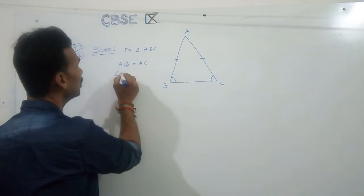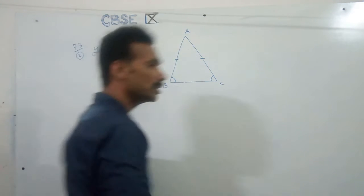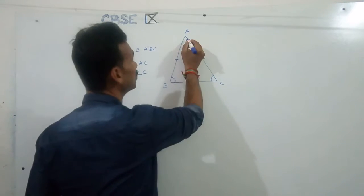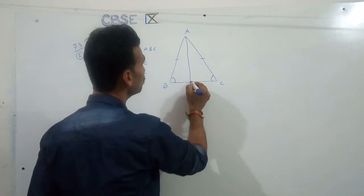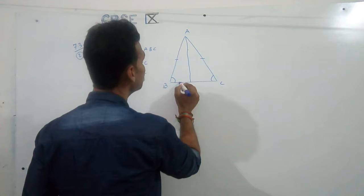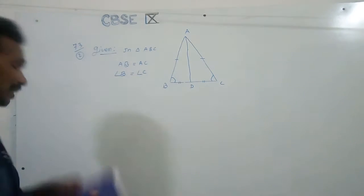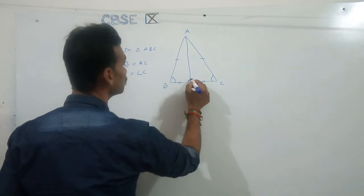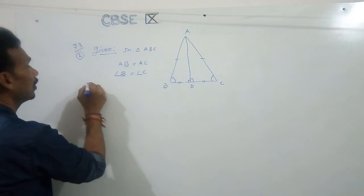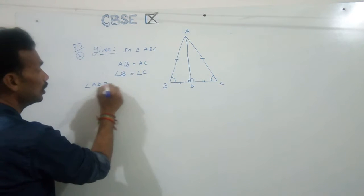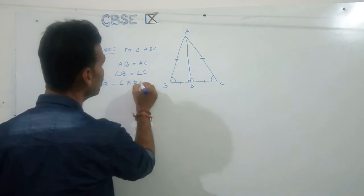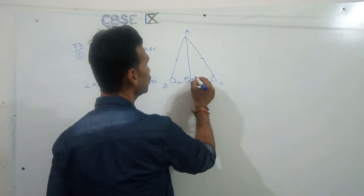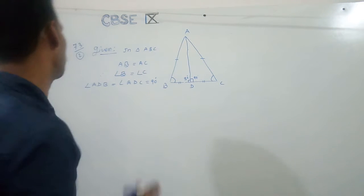Then we can say that this angle equal to this. Therefore angle B equal to angle C, period, understood. And then so that first to prove AD bisects BC. AD bisects BC means this AD bisects BC. That is AD is an altitude, meaning perpendicular bisector, means this is so AD. Now angle ADB equal to angle ADC equal to 90 degree, clear? This is 90 degree, clear, this is 90 degree, clear.